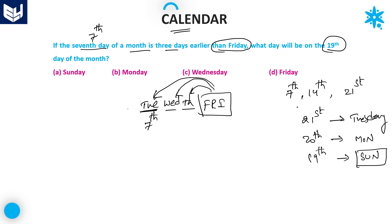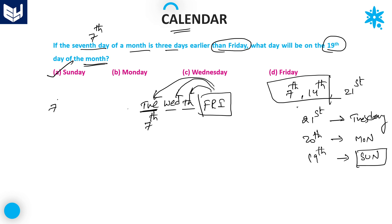The question asks for the nineteenth day of the month, which is Sunday. Note that the seventh day and the fourteenth day are both the same — Tuesday — because after every seven days the week repeats.